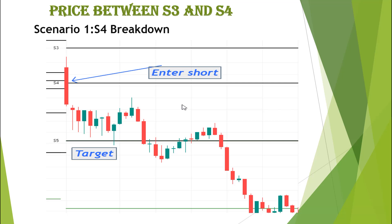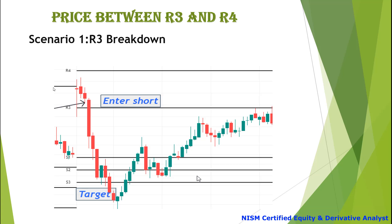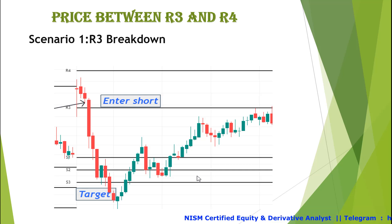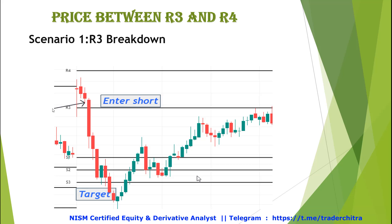If the price is in between R3 and R4 — between the two resistance zones — Scenario 1 is R3 breakdown. If the price breaks down from R3 and the following candle breaks the low of the previous candle, we can enter a short trade for the target of S3. Stop loss is the high of the last swing. In this example, the price is between R3 and R4 and we got a rejection at R3. Targets are S1, S2, and S3.